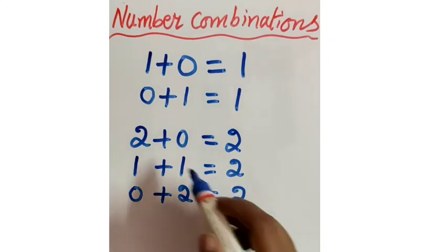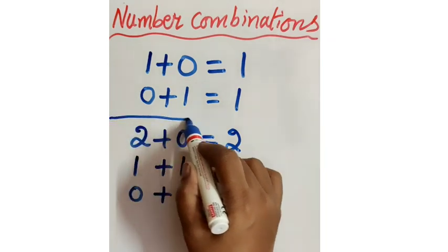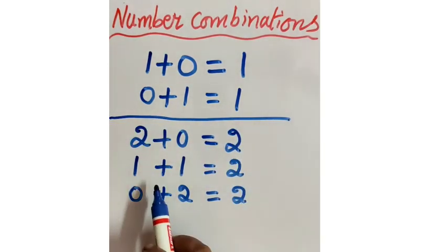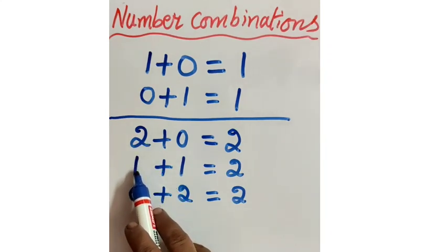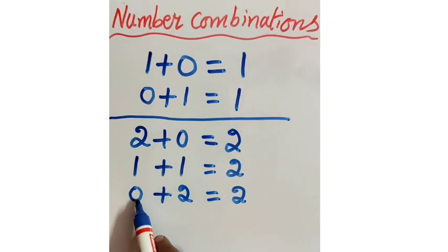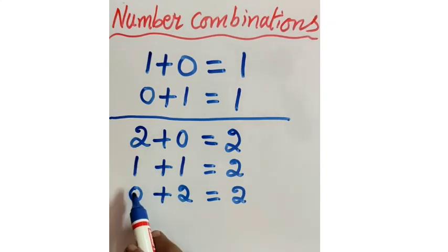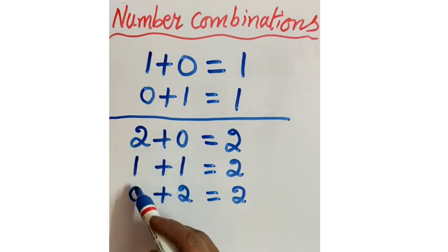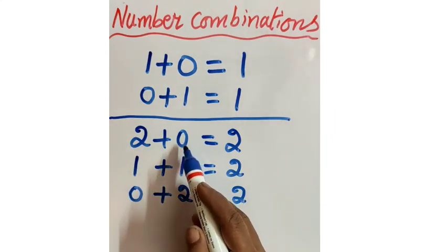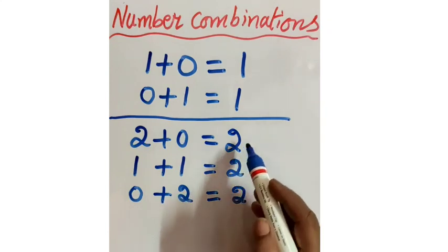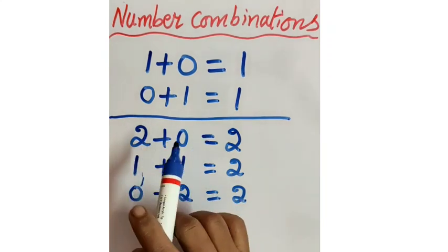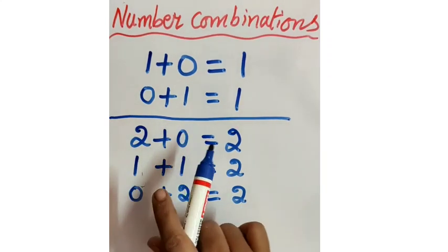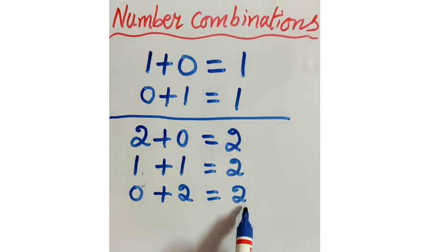Now here is a trick. I will show you the trick. The number before 2 is 1, and the number before 1 is 0. So: 2, 1, 0. These are the before numbers. And the after numbers: 0, 1, 2. So we get the sum 2. Before number plus after number equals the required answer. Did you understand, children? Let us take one more example so you can understand easily.